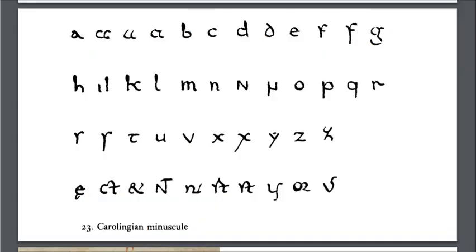Here is an example of what Caroline Minuscule looks like. You can see the uncial A but also more open varieties, you can see the tall-backed D, the tall S in the third row, and at the bottom you can see some of the common ligatures used in Carolingian script, such as the E-caudata in particular in the bottom left-hand corner.